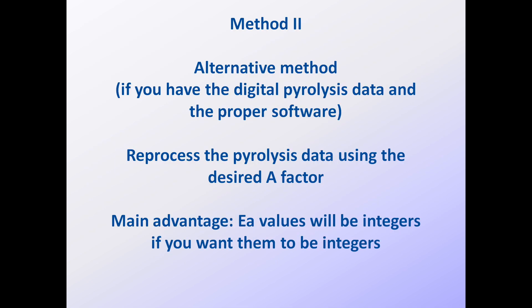The alternative method for adjusting source rock kinetics is to reprocess the original pyrolysis data using the desired A factor. This method requires that you have the digital pyrolysis data and that you have software capable of extracting kinetics from a single pyrolysis run or multiple pyrolysis runs. There is no difference in the accuracy of the reprocessing method compared to the adjustment method I just described, but there may be some convenience in being able to force the activation energies to be integers.